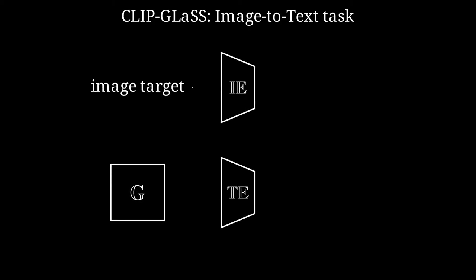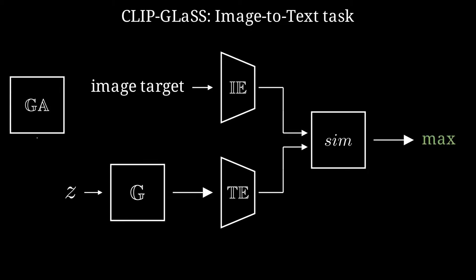In the same way, for the image-to-text task given a target image and a text-generative architecture, in this case GPT-2, and CLIP's encoders, we have used a genetic algorithm to find the Z that generate the text which embeddings are most similar to the ones of the target image.